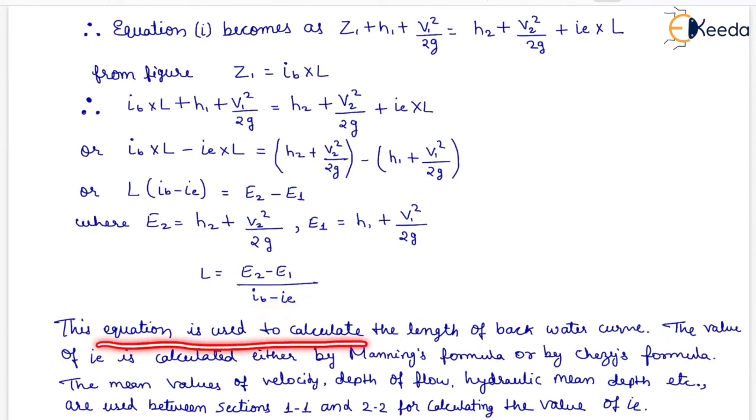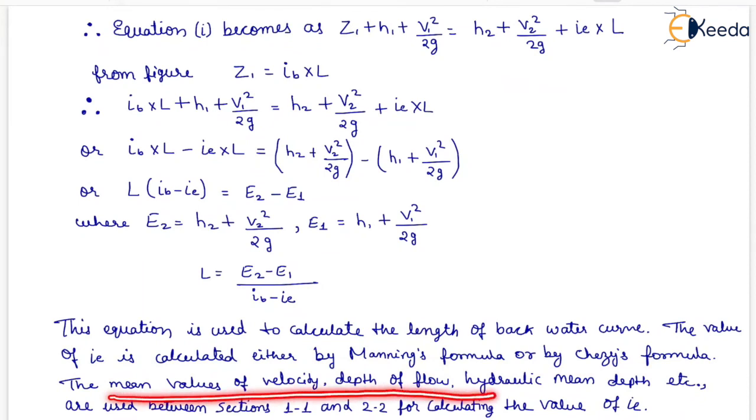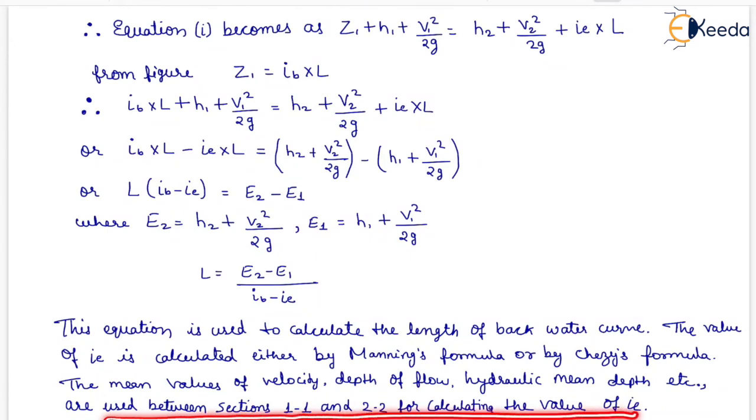The value of iE is calculated either by Manning's formula or by Chezy's formula. The mean values of velocity, depth of flow, hydraulic mean depth etc. are used between section 1-1 and 2-2 for calculating the values of iE. That is all about the backwater curve and afflux. Thank you very much students. Bye!